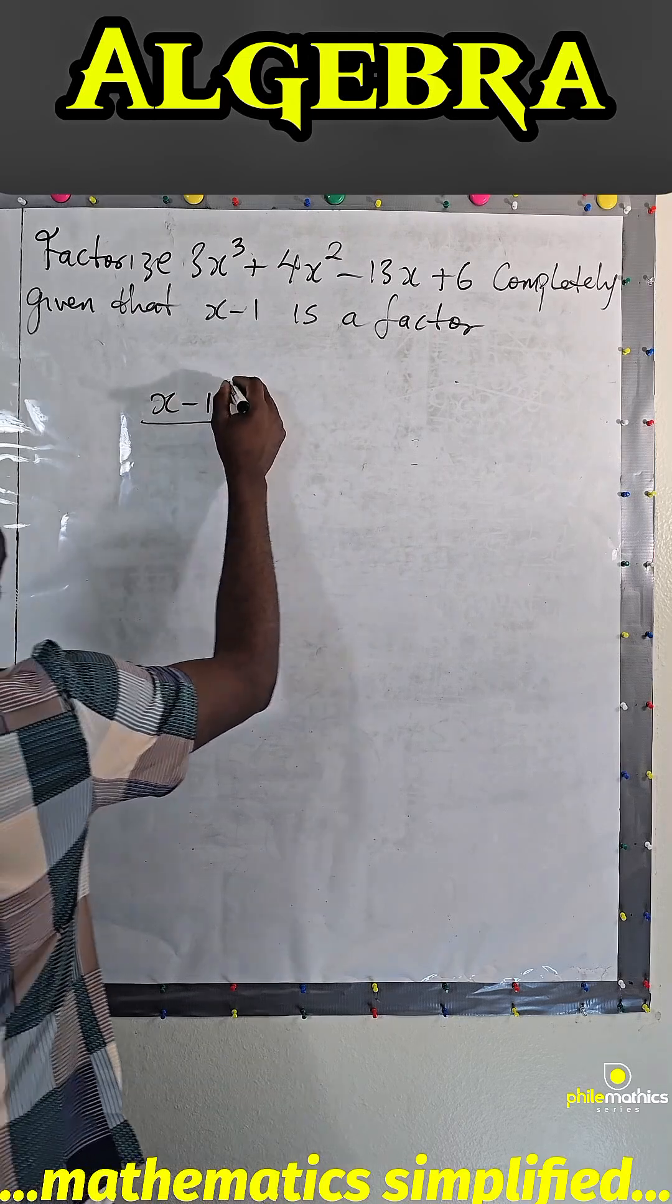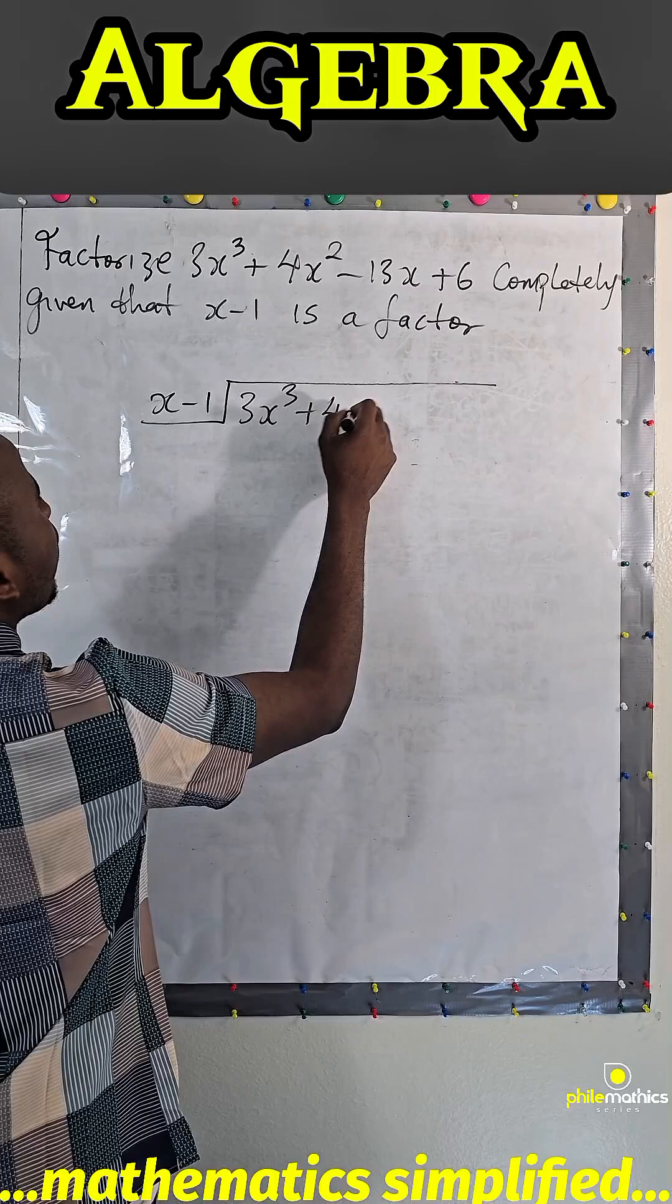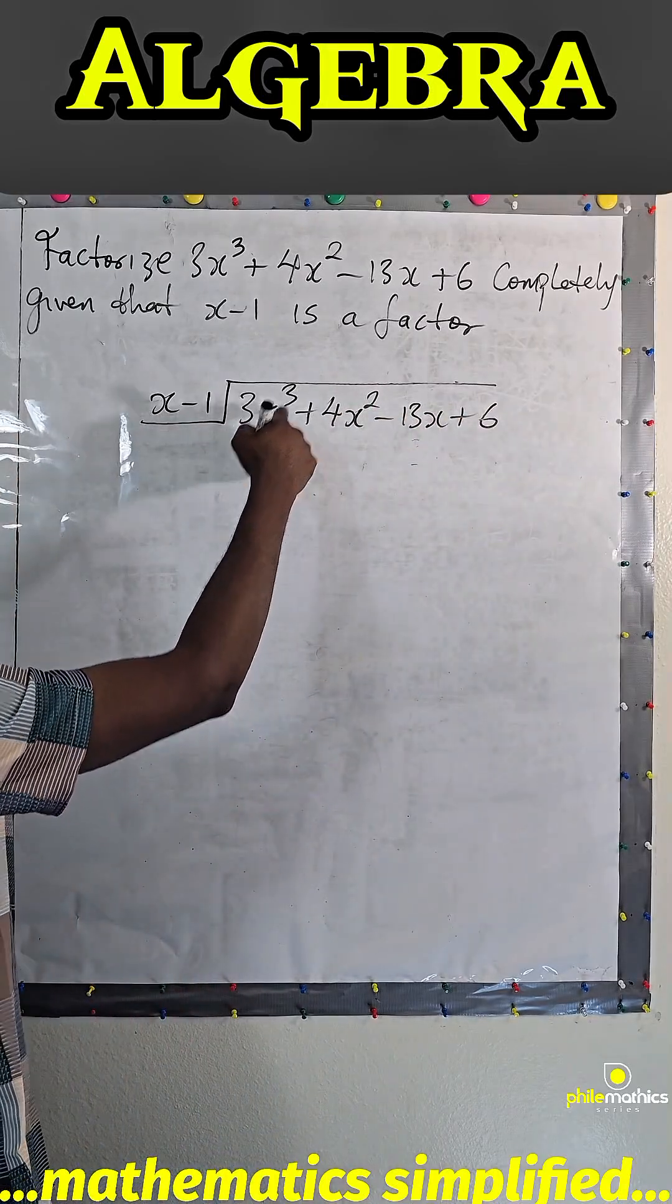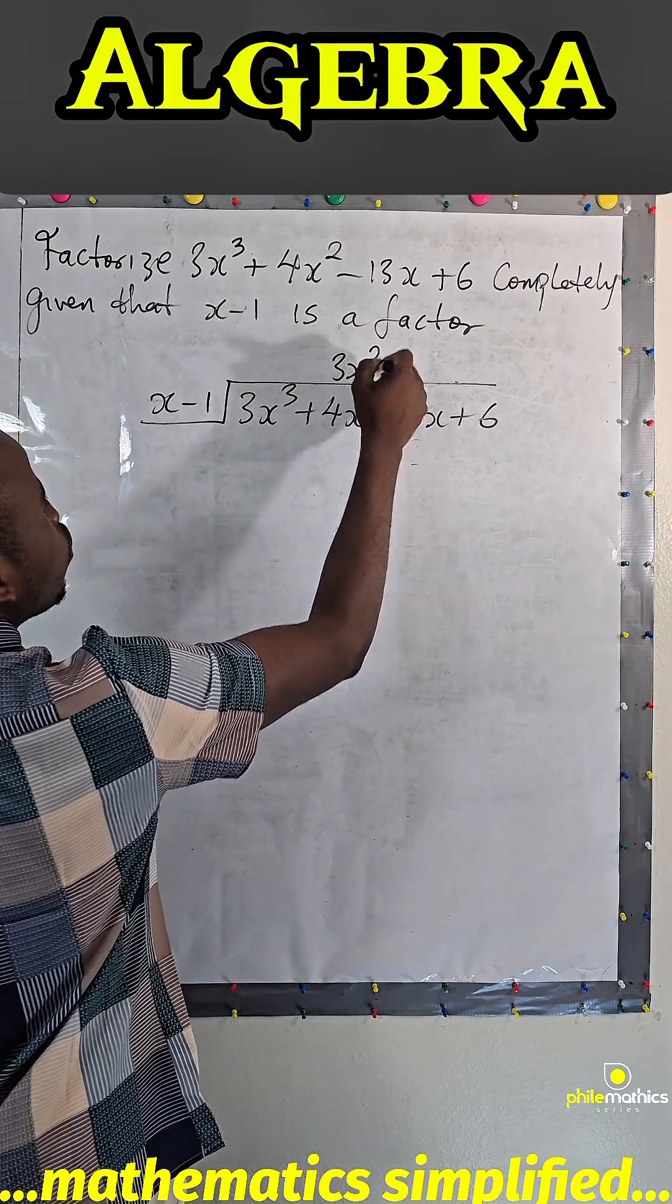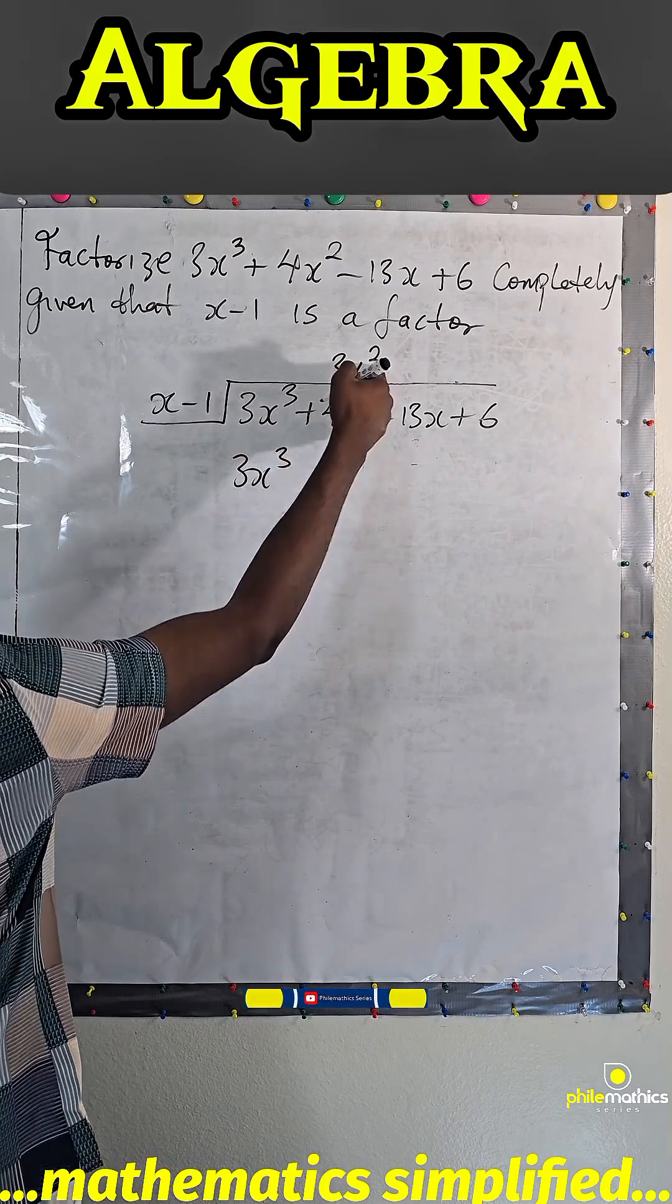So x minus 1 into 3x³ + 4x² - 13x + 6. X into 3x³ is 3x². You want to put them to be in the same part. 3x² times this, 3x². 3x² times minus 1, minus 3x².